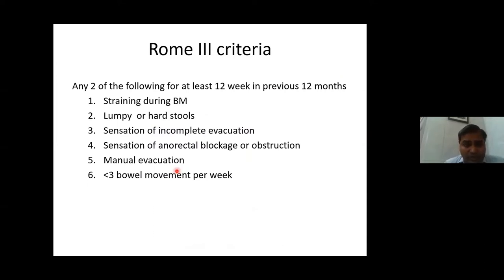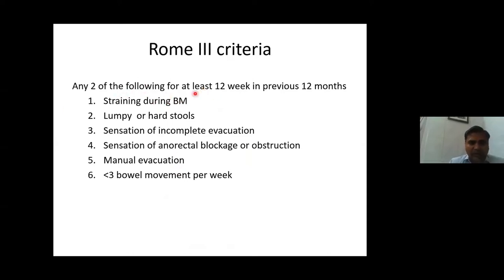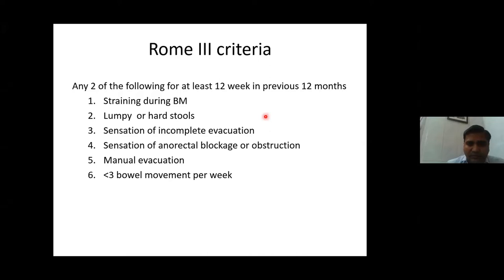Chronic constipation is diagnosed by the Rome III criteria, which is consensus-based. It was initially developed for irritable bowel syndrome, then chronic constipation was included as a common feature. Any two of six criteria present for at least 12 weeks in the preceding 12 months qualifies: straining during bowel movement, lumpy or hard stool, sensation of incomplete evacuation, sensation of anorectal blockage or obstruction, manual evacuation, or fewer than three bowel movements per week.